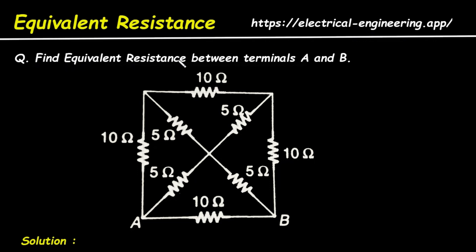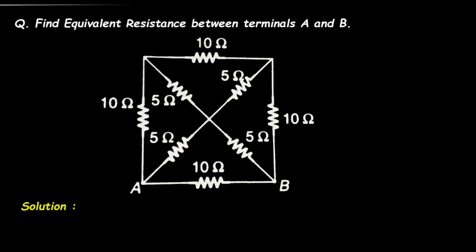Find equivalent resistance between terminals A and B. Now here for this network we have to determine its equivalent resistance. Solution.